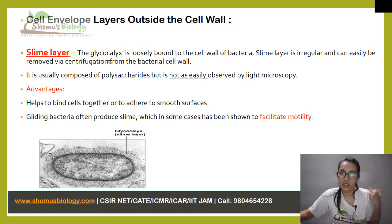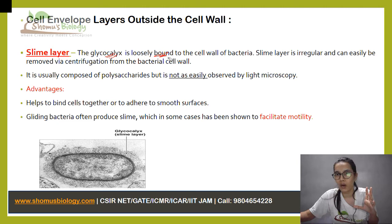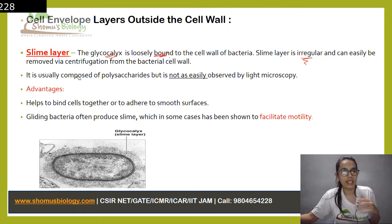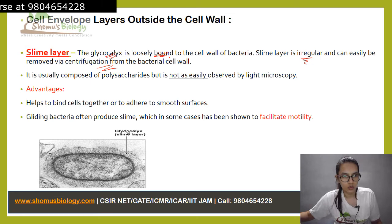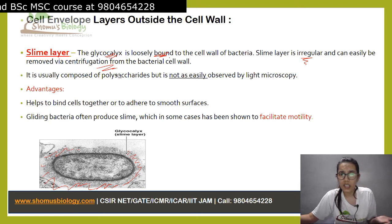If we talk about the slime layer, they are also made up of glycocalyx, but the difference is that the capsule is tightly bound to the cell wall, whereas the slime layer is loosely bound. Because of that they have an irregular shape, and they can easily be removed via centrifugation — if you just take a sample and centrifuge it, the slime layer is easily removed from the bacteria.